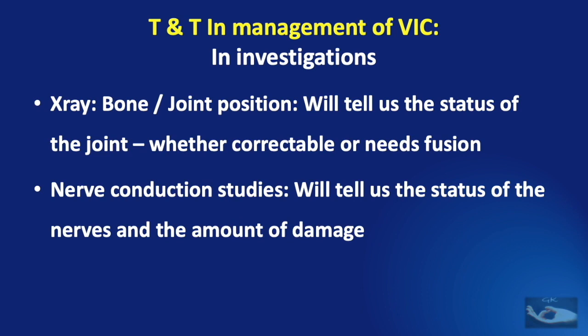Having made a diagnosis and understood the severity of the problem, we need basically two investigations apart from the routine investigations. The first is X-rays to note the bone or joint position, which will tell us the status of the joint — whether it is correctable or needs fusion. Secondly, nerve conduction studies, which will tell us the status of the nerves and the amount of damage the nerves have undergone.